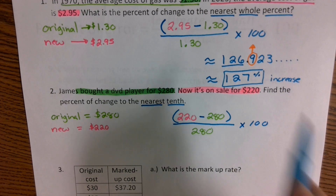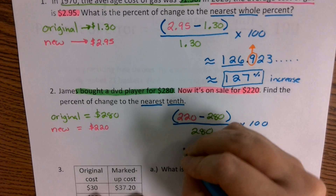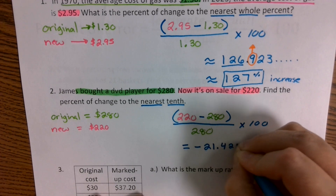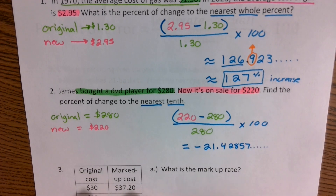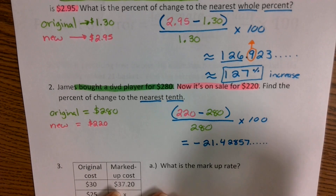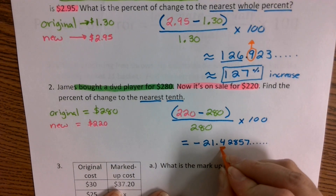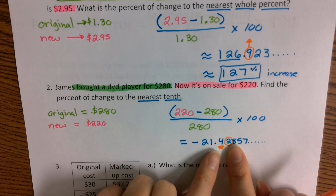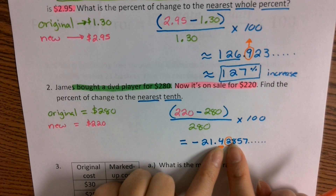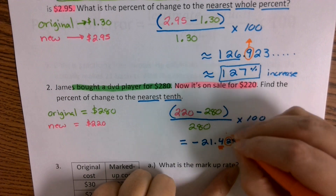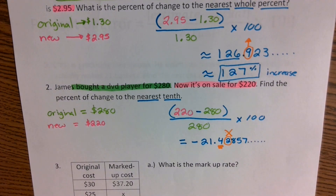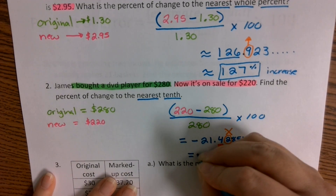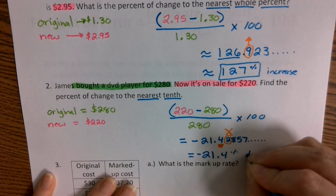If I type this into my calculator and hit enter, it comes out to negative 21.42857, continuing on. Rounding to the nearest tenth, my tenth place value is where that four is. I look at the number behind it — the two — which tells me to keep the four, not round up. So my final answer is negative 21.4% as my decrease.